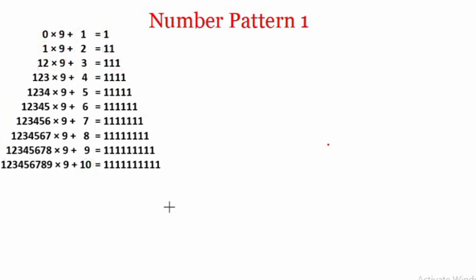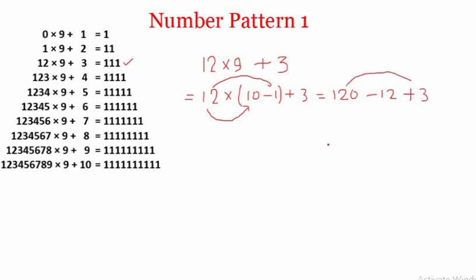Now let's start with the analysis of this particular term. It's written 12 × 9 + 3 which is equal to 12 × (10 - 1) + 3. We can write 9 as 10 - 1. Now if we apply the distributive property, so 12 × 10 minus 12 × 1, the first one is 120, the second one is minus 12, then plus 3.